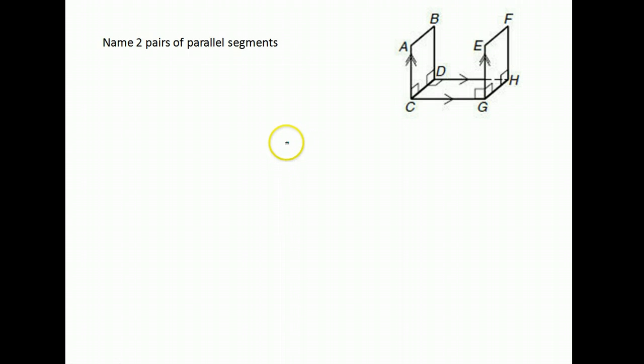All right, name two pairs of parallel segments. Now I'm going to go with the ones that are marked here in the figure because that's the safest way to go. Remember parallel are marked with these arrows. This has two arrows and this has two arrows, which means they are parallel to each other.